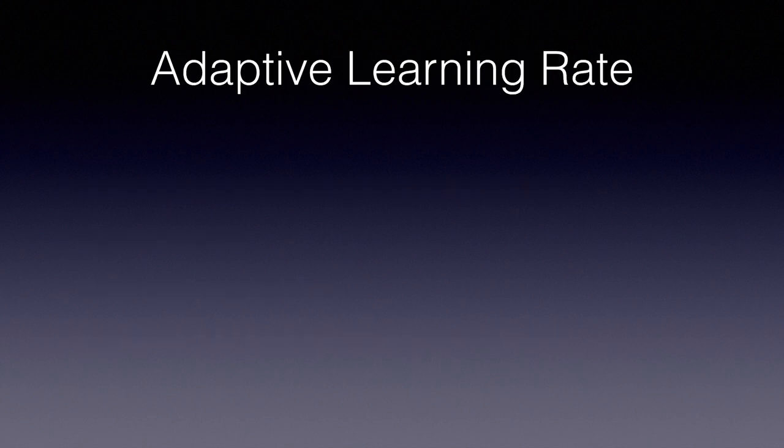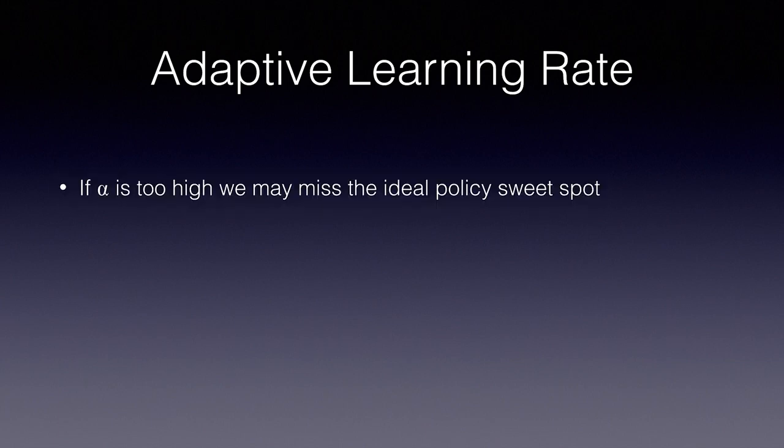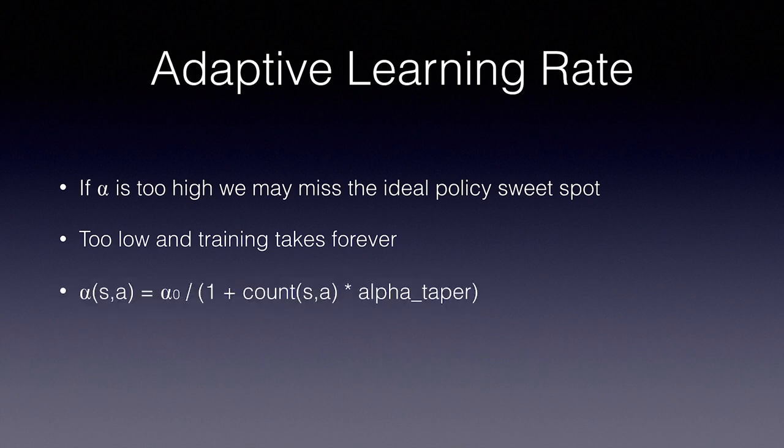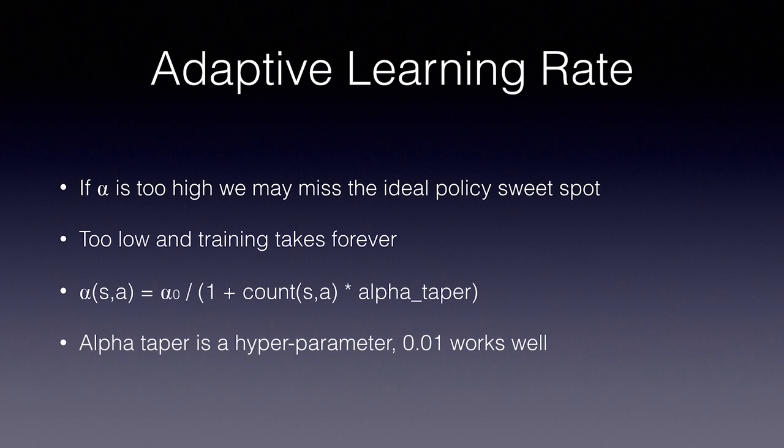The next tweak we're going to look at is called the adaptive learning rate. The learning rate expressed as alpha is the blending factor we use to update our queue table with each new unit of experience. If alpha is too high, we may miss the sweet spot of ideal policy. And if it's too low, training will take forever. A great way to get both speed and accuracy is an adaptive learning rate. One way is to start high and taper it down at each step. But some states are visited more often than others so a more intelligent way to do this is to count how many times we've experienced each state action pair and taper based on that experience count. The alpha for the given state in action is equal to the starting alpha divided by 1 plus the number of times we've experienced a state in action times the alpha taper parameter. Alpha taper is another hyperparameter which we can tune. For this task, 0.01 also seems to work great.